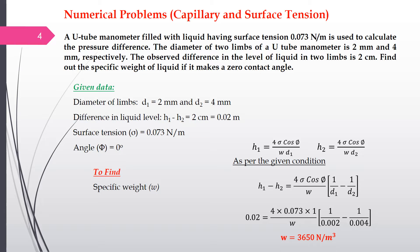In the next problem, a U-tube manometer is filled with a liquid having surface tension of 0.073 N/m and is used to calculate the pressure difference. The diameter of the two limbs of the U-tube manometer is 2 mm and 4 mm respectively. The observed difference in the level of the liquid in the two limbs is 2 centimeters, and we have to find the specific weight w, assuming a contact angle of 0 degrees.